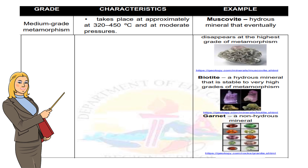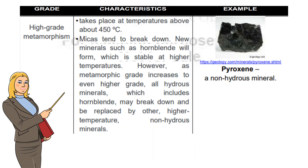Medium-grade metamorphism takes place at approximately 320 to 450 degrees Celsius and at moderate pressures. Examples are muscovite, biotite, and garnet. High-grade metamorphism takes place at temperatures above about 450 degrees Celsius. Micas tend to break down, and new minerals such as hornblende will form, which is stable at higher temperatures. As metamorphic grade increases even further, all hydrous minerals, including hornblende, may break down and be replaced by higher-temperature non-hydrous minerals, such as pyroxene.